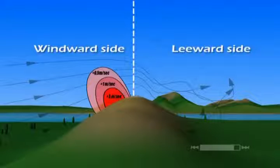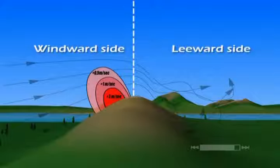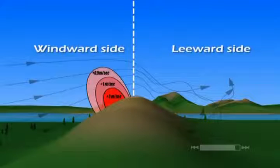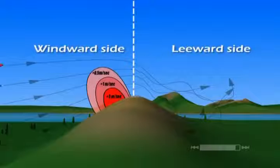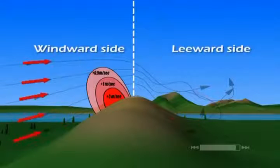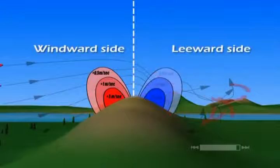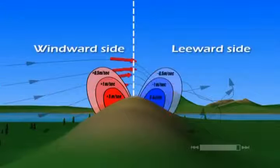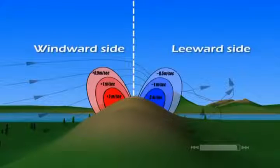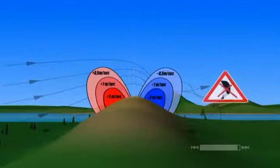On the leeward side, things are completely different. The airstream does not create upward lift, but rather downward moving air currents that are very turbulent. The further you descend into this zone, the stronger the downdraft becomes. The presence of turbulence makes flying in these areas extremely ill-advised.